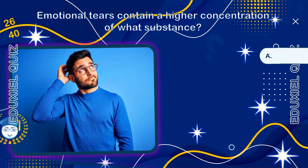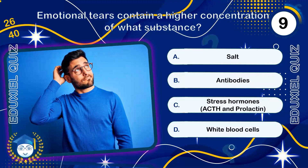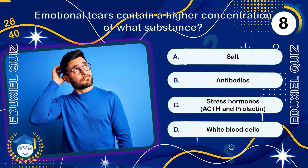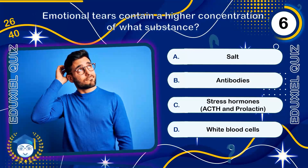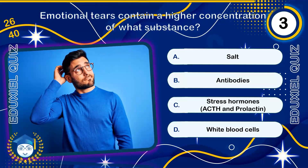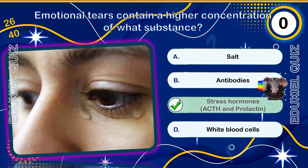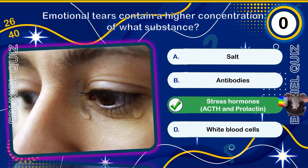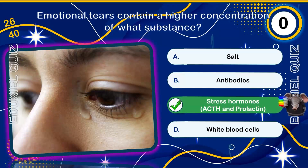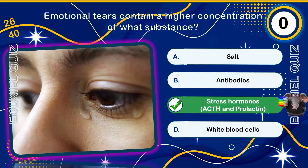Emotional tears contain a higher concentration of what substance? Stress hormones, ACTH and prolactin. Scientists suggest that crying may be a way for the body to excrete excess stress hormones built up during periods of high emotion.